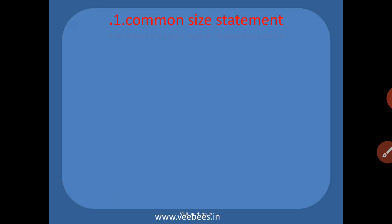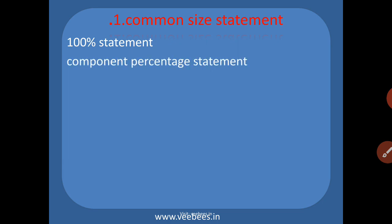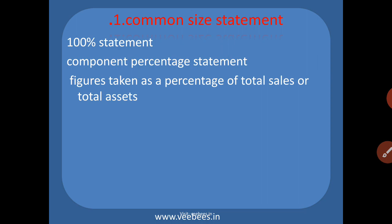The first statement we are discussing as a part of vertical analysis is the common size statement. It is also known as a 100 percentage statement. Another name for this statement is component percentage statement, because the percentage of each component in the financial statement is shown.